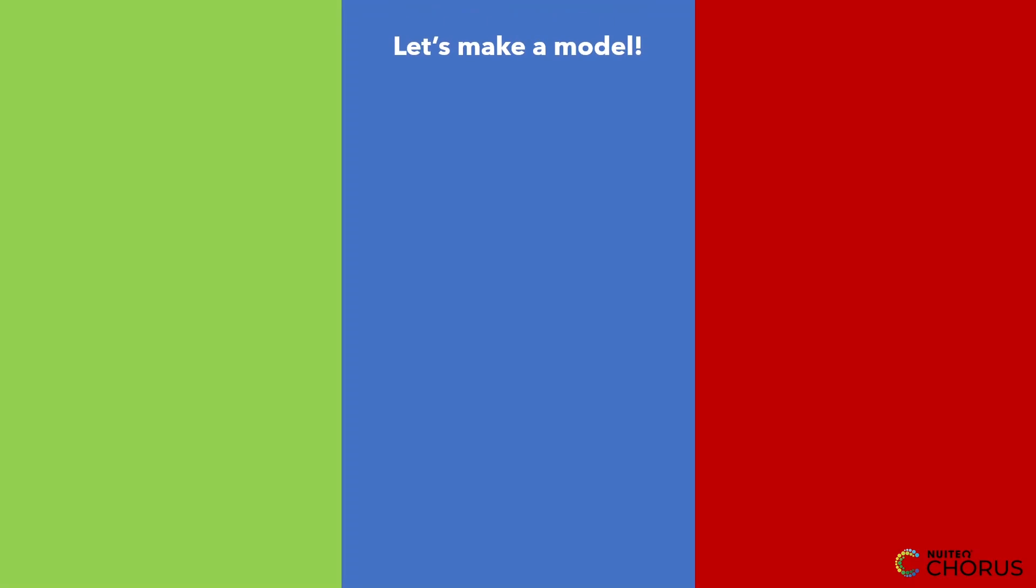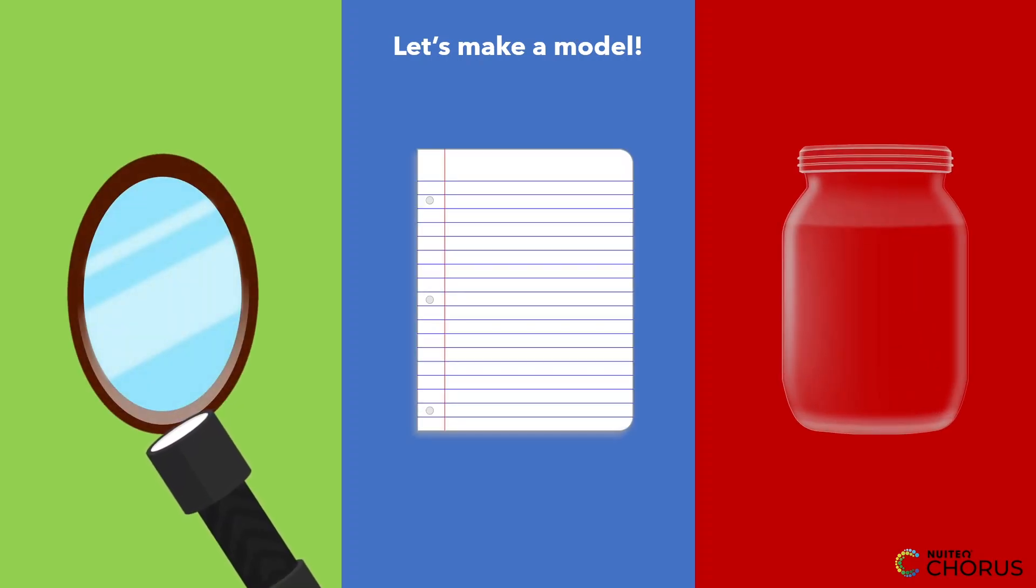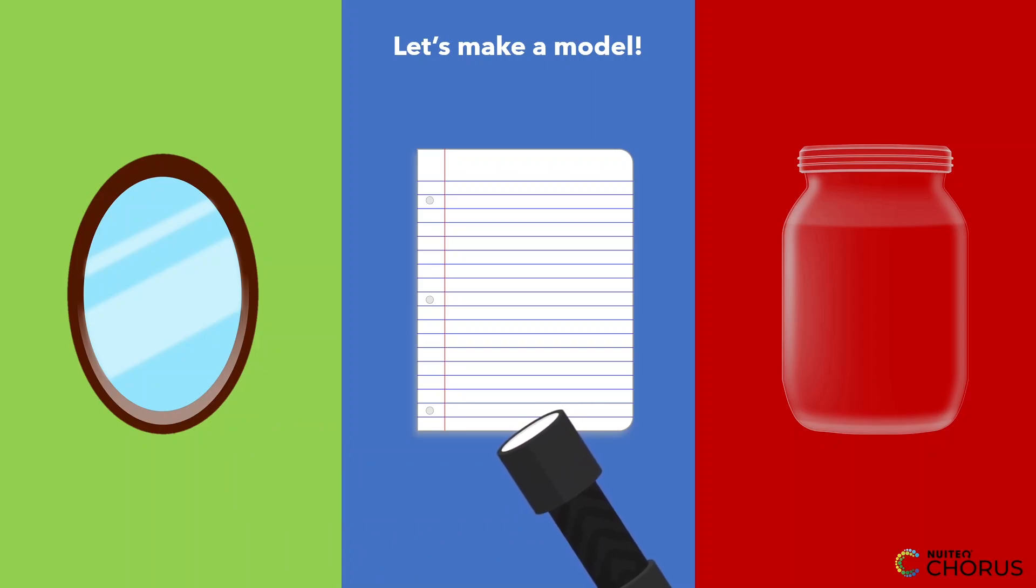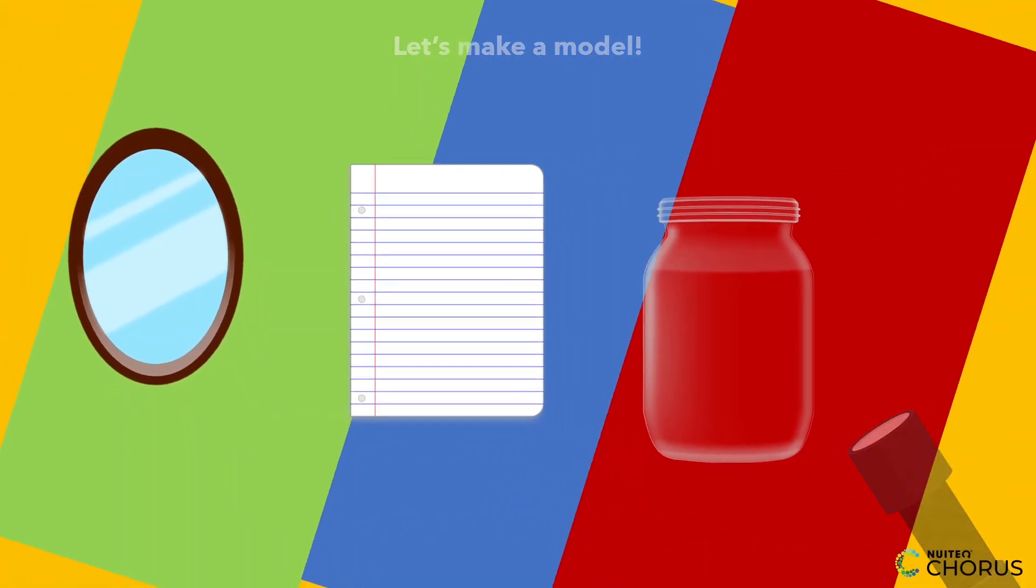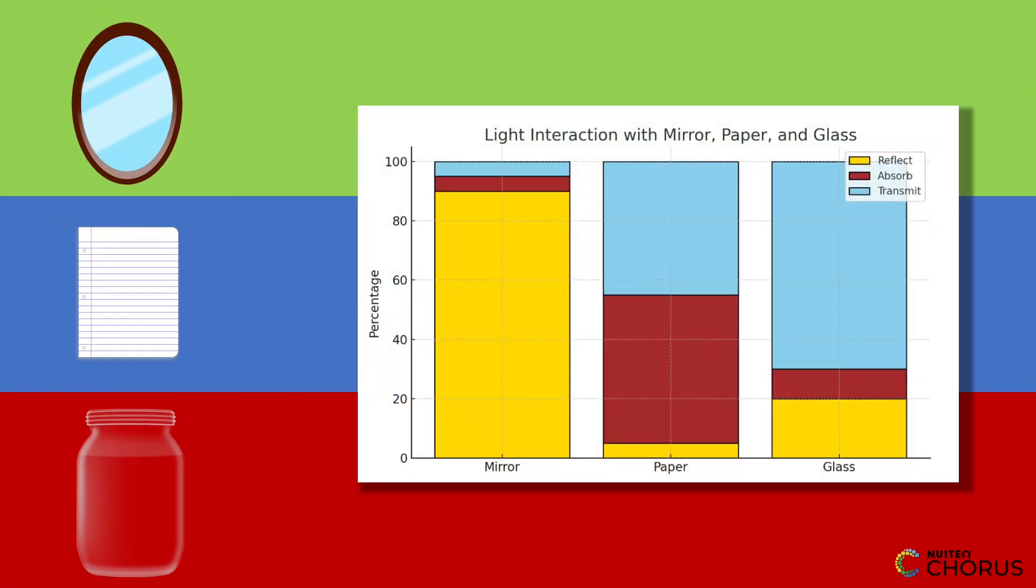Now let's make a model to help us understand how these three things work. We can take three different materials and test how they reflect, absorb, or transmit light waves. For example, we can use a mirror, a piece of paper, and a piece of glass, and we can shine a flashlight on each of them and see what happens. We can also make a drawing or a chart that shows which materials reflect, absorb, or transmit light waves the best.